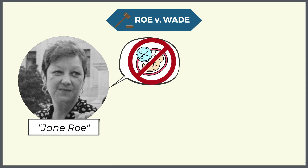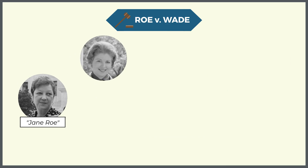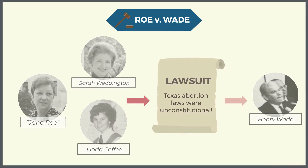After Roe bore her illegitimate daughter and put her up for adoption, she, with the help of her attorneys Sarah Weddington and Linda Coffee, filed a lawsuit against her local district attorney Henry Wade, alleging that Texas's abortion laws were unconstitutional. On January 22nd, 1973, the Supreme Court issued a 7-2 decision in favor of Jane Roe, holding that a pregnant woman has a fundamental right to abortion.